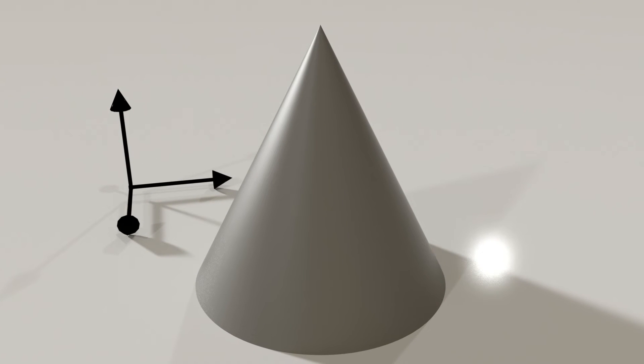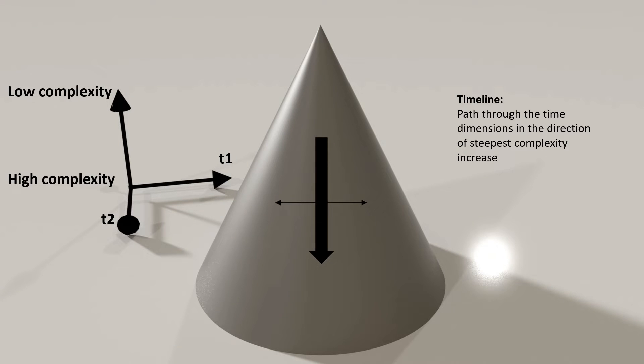With two time dimensions, this plot of complexity becomes the surface of a cone. Again, when we zoom in, the landscape can be bumpy. The steepest slope we will call a timeline. Throughout these videos, we will represent a timeline graphically as a fat arrow, with thin arrows indicating the direction of sideways in time.